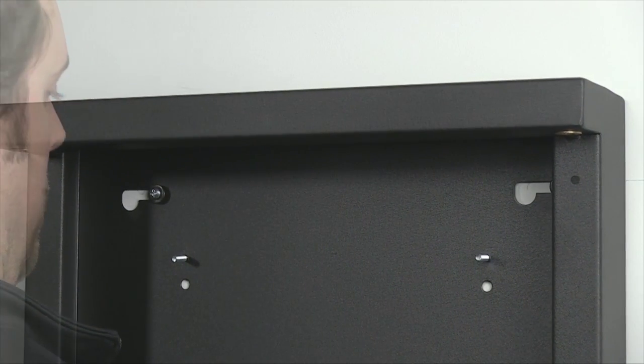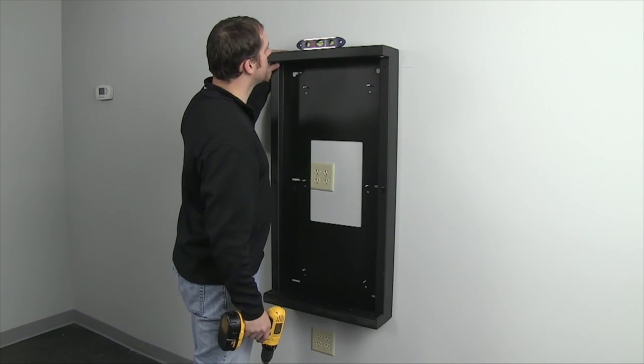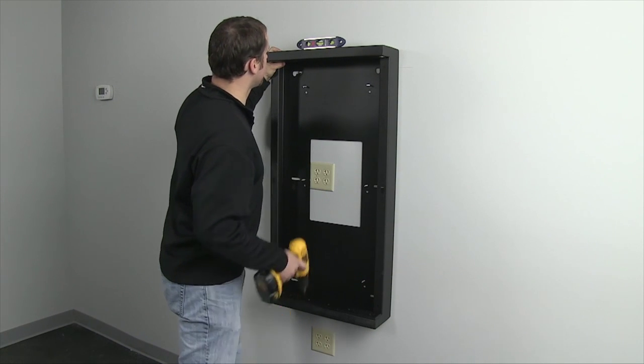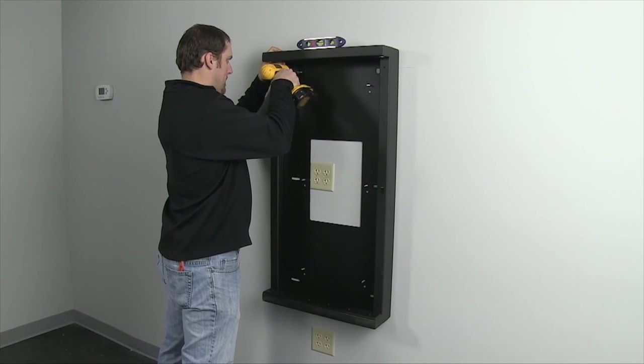Use a level on the top edge of the rear rack section and hold the rack in the level position if the bubble is slightly off. Then while holding the rack, tighten the mounting hardware on both sides.